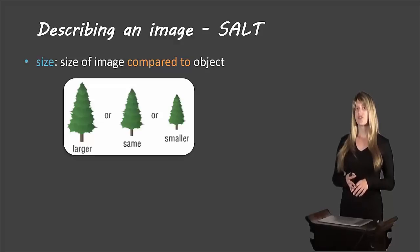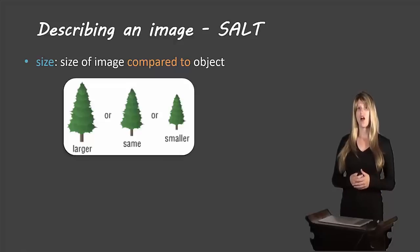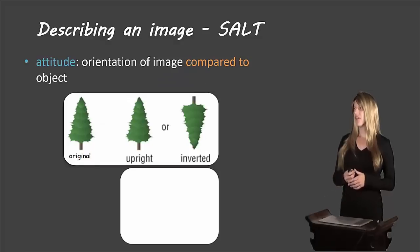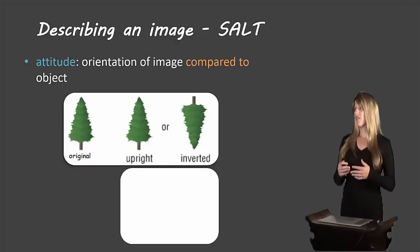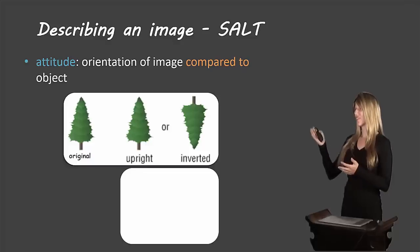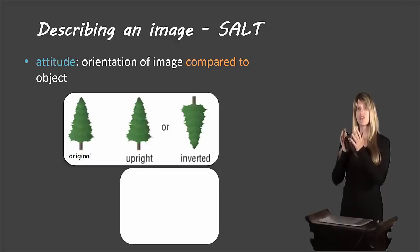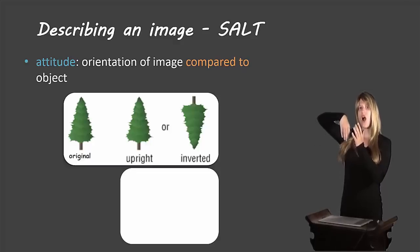S stands for size — you're comparing the size of the image to the original object. Is the image the same size, smaller, or larger? A stands for attitude, which has to do with the orientation of the image. If the original is a tree right side up and the image is also right side up, we would say those are upright.